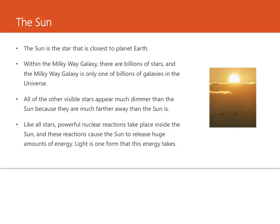While it takes less than 10 minutes for sunlight to reach the earth, light from the nearest stars beyond the solar system takes many years to reach the earth. For stars that are even farther away, it can take billions of years for their light to reach us. So much light from the sun reaches the earth that during the day the entire sky is lit, which is why other stars cannot be seen in the daytime. Like all stars, powerful nuclear reactions take place inside the sun, causing it to release huge amounts of energy — light is one form that energy takes.